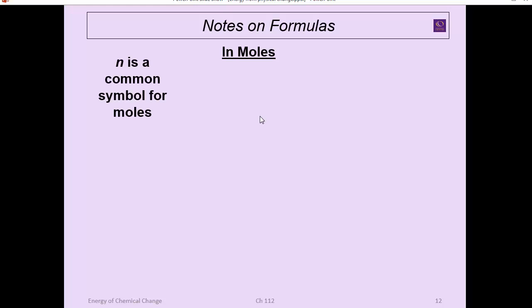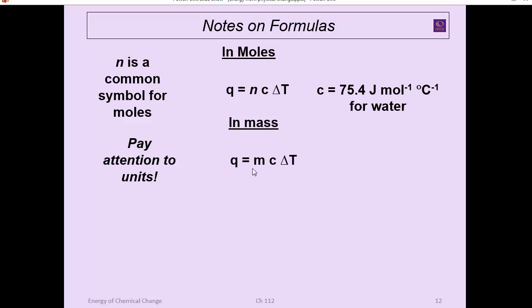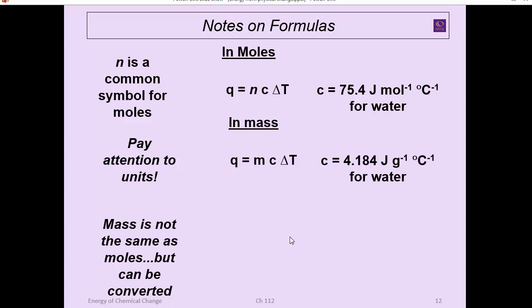A couple notes on the formulas. N is a common symbol for moles. So sometimes you see this formula listed as Q equals NC delta T. That means when I look up my specific heat, I've got to look for specific heat and convert it to per moles. Sometimes you see it in mass. So just pay attention to the units. In this case, it would be MC delta T. In that case, you want to use a specific heat that is in terms of joules per gram Celsius. And these are interconvertible. How many grams are in a mole of water? Basically, the conversion factor is 18. Just a reminder once again, C is state dependent. The point here is make sure that when you look up C, pay attention to the units and pay attention to what the state is.